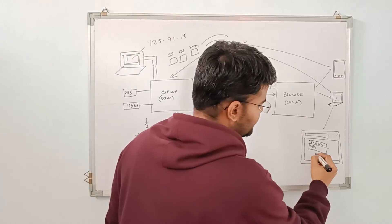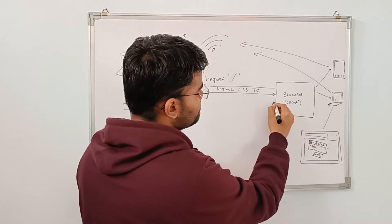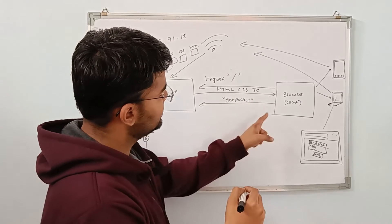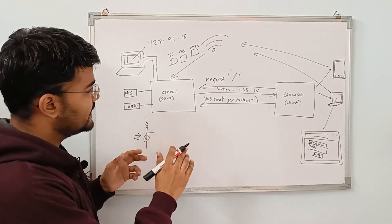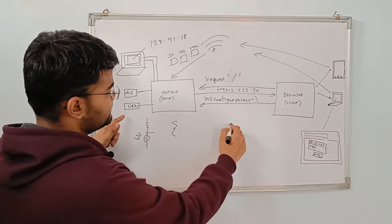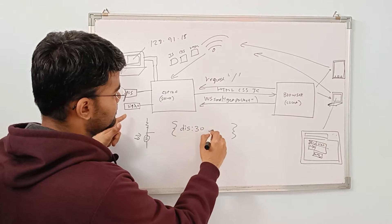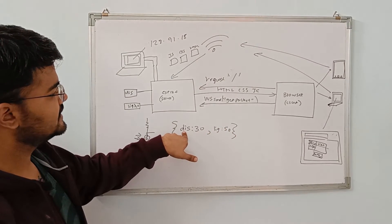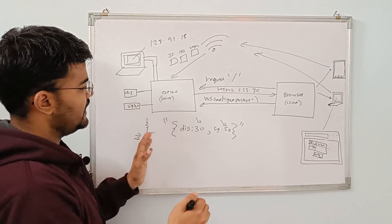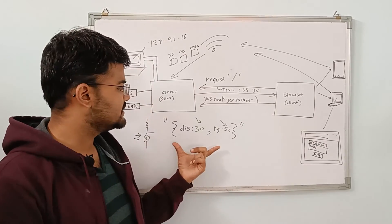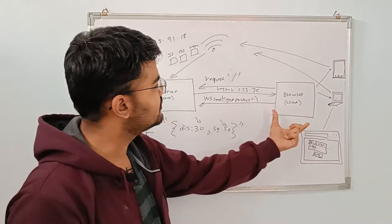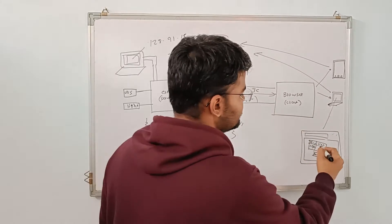After the page loads there is one button, and as soon as we press it, a message 'get_packet' is sent through WebSocket. The server receives 'get_packet' and then takes the two sensor values and packs them into a JSON string. The JSON string contains the parameters distance and light along with their values. If you are familiar with Python it looks like a Python dictionary, but in JavaScript it's called JSON. This JSON packet is then sent to the browser.